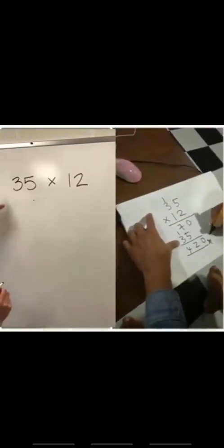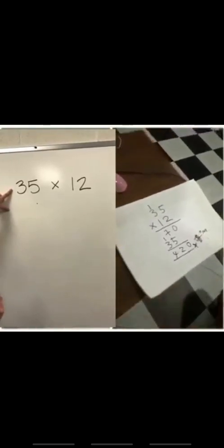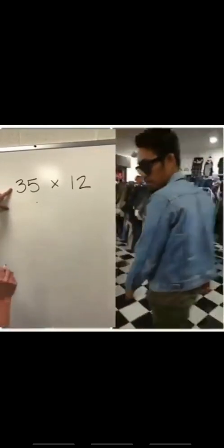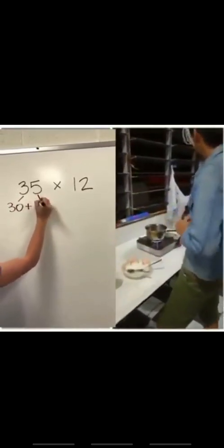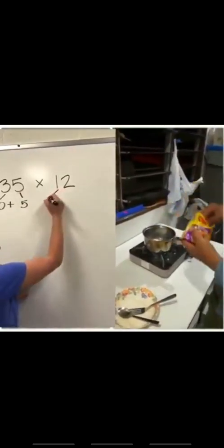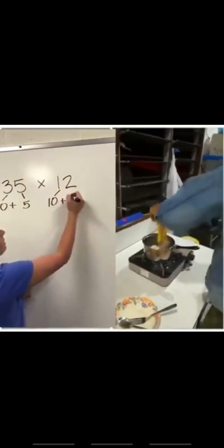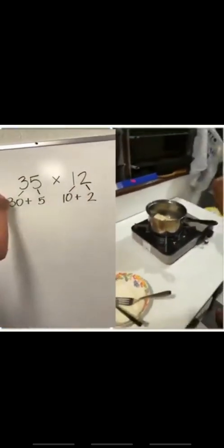So first thing is we have our multiplication problem 35 times 12. The first thing we need to do after that is expand these two numbers. We need to break it down into its tens and its ones. I've got three tens, which is 30, and five ones, so that is 30 plus 5. 12 is one ten plus two ones. Okay, so that's step one.